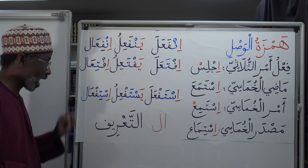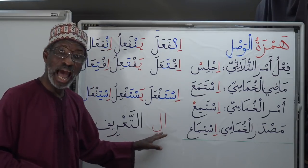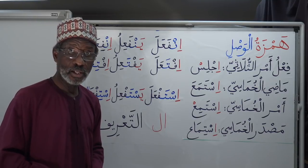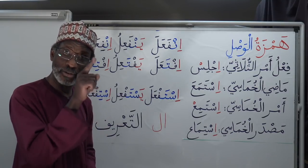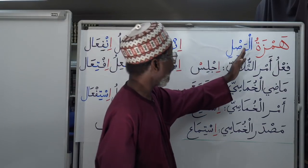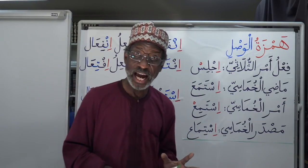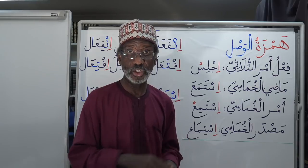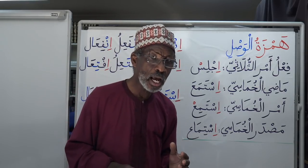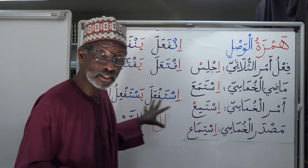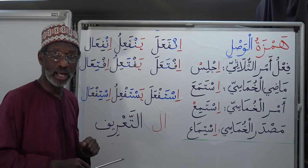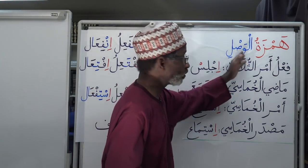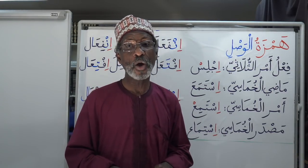Lastly in this section, the 'al' — the definite article 'the' — you must not write Hamzah on the alif of 'al'. For example, al-kitabu: don't put Hamzah on the alif, because it is a weak alif called Hamzatul Wasl. So Hamzatul Wasl is a weak alif which should not carry the Hamzah symbol. Once you learn all these rules, you need to ask: shall I put Hamzah on this alif or not? If it's one of these cases, don't put Hamzah on it at all.